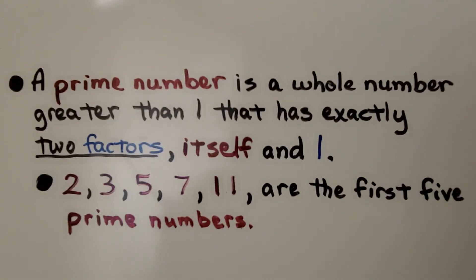A prime number is a whole number greater than one that has exactly two factors, itself and one. Two, three, five, seven, eleven are the first five prime numbers.